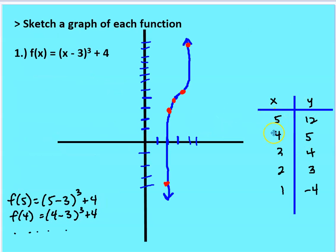Here's what I come up with for the table: x = 5 gives y = 12, x = 4 gives y = 5, x = 3 gives y = 4, x = 2 gives y = 3, and x = 1 gives y = negative 4. Since the parent function is a positive cubic, it's going to be down-up. I plot my points and then sketch a line. Remember your PEMDAS when doing the calculations.